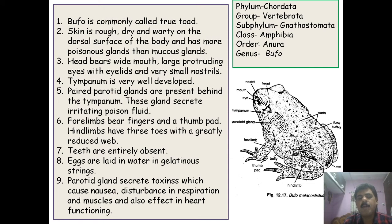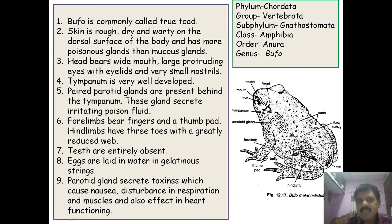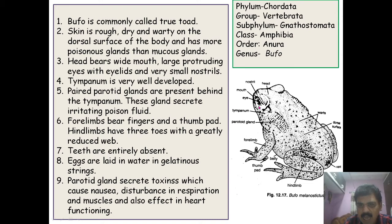The second example from Amphibia belongs to Order Anura, which includes all frogs and toads. Bufo is commonly called the true toad. The skin is rough, dry, and covered with warts. The dorsal surface has more poisonous glands than mucus glands. The head bears a wide mouth, large protruding eyes with eyelids, and very small nostrils.